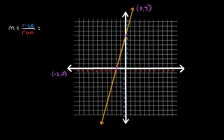We start from the point further to the left and move to the right. The rise — the vertical change — is up one, two, three, four, five, six, seven spaces. Then the run is over one, two spaces. So we went up seven and over two. Our slope is seven over two, which can't be simplified further. Since this is a positive slope, our answer is also positive.